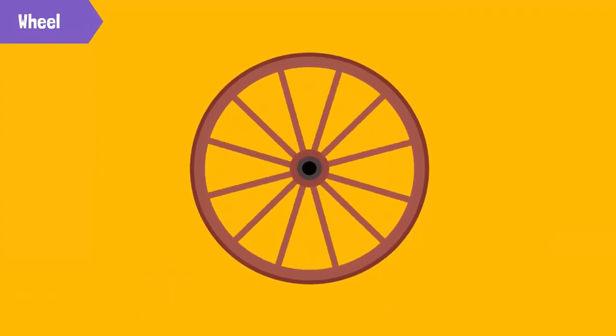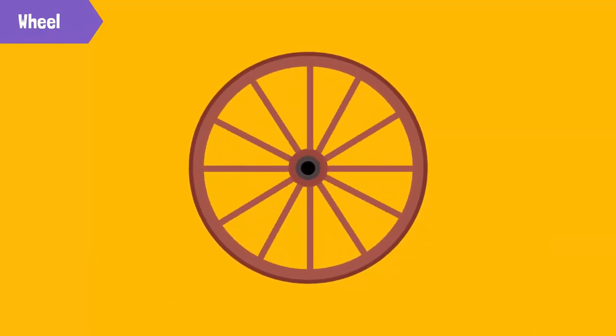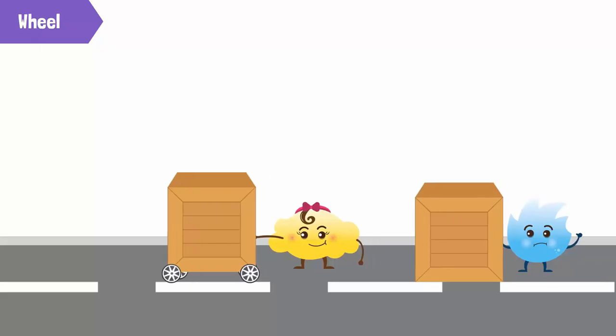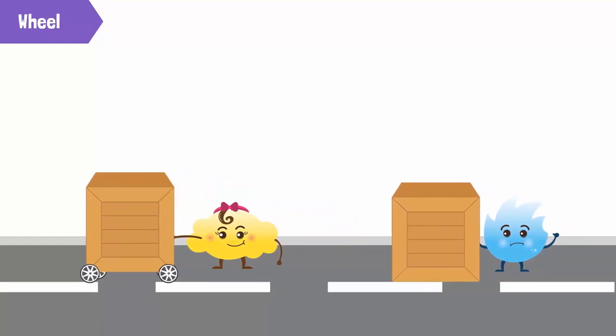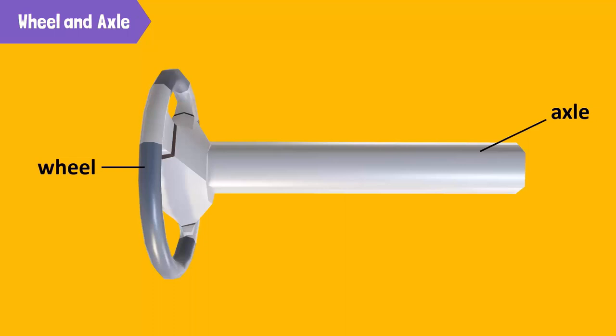The wheel is one of the best inventions in history. It has made our lives far easier than before. It is easier to drag an object with wheels compared to an object without wheels. The wheel and axle is a modified form of the wheel in which a shaft or a wheel of smaller diameter called an axle is attached to the wheel.